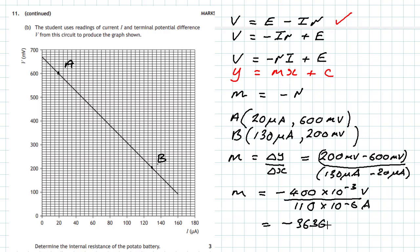Now if I do that in my calculator, I end up with the gradient equal to minus 3600 ohms. So I can say that the internal resistance of this potato cell is going to be equal to about 3600 ohms to two significant figures.